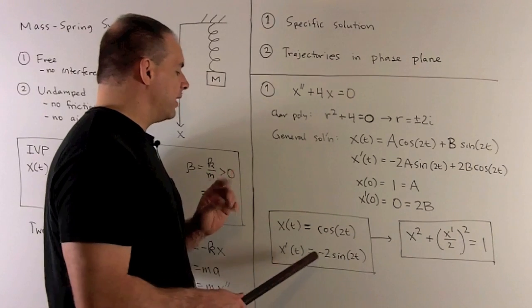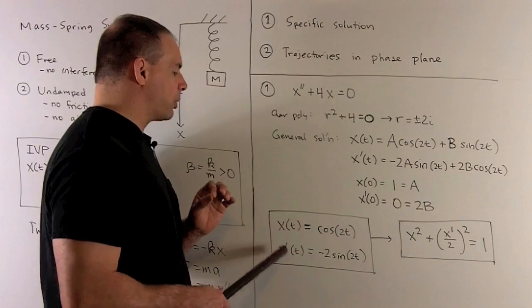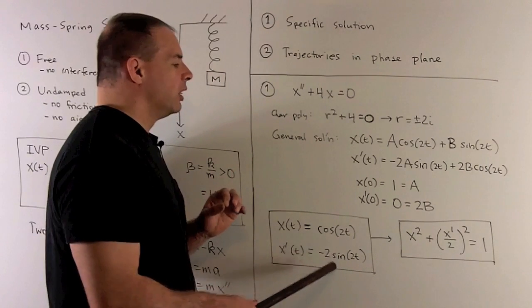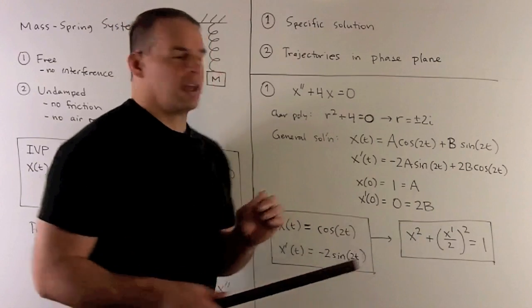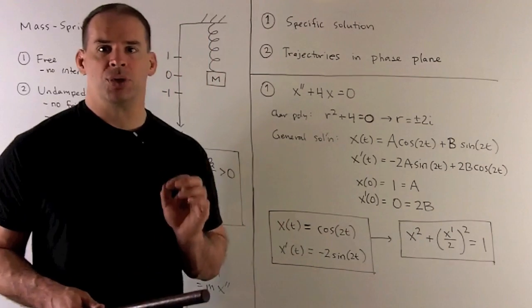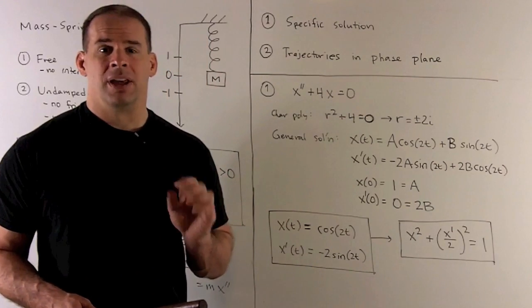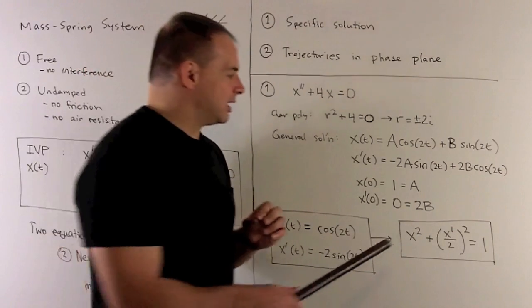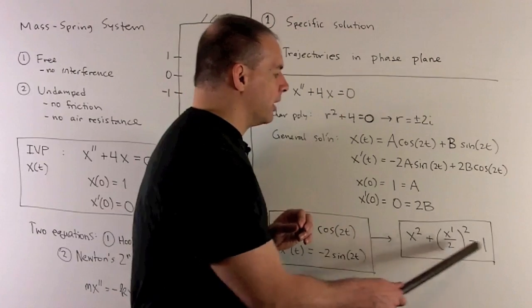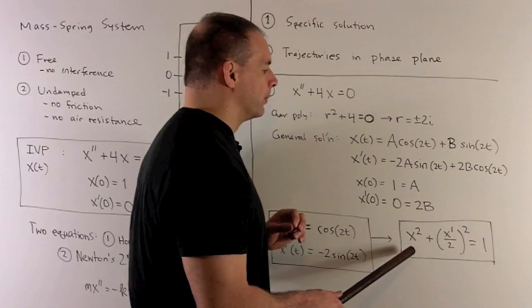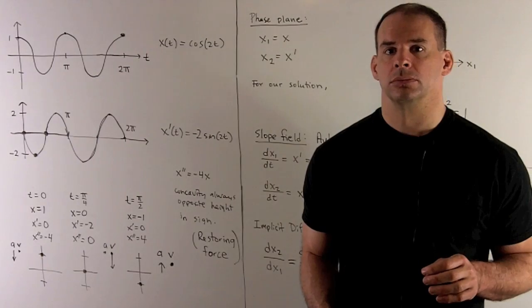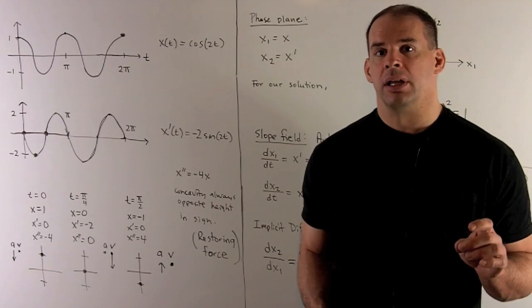If we divide X prime by 2, we note that X squared plus (X prime over 2) squared equals 1. Notably, the variable t does not appear explicitly in this equation.